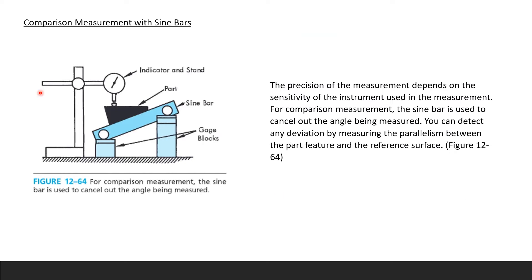For comparison measurement, the sine bar is used to cancel out the angle being measured, so the precision of the measurement depends on the sensitivity of the instrument. You can detect any deviation by measuring the parallelism between the part feature and the reference surface. We use the sine bar, an indicator and stand, and gauge blocks to set up the sine bar against the part. What we are trying to do is get a triangle in our setup.